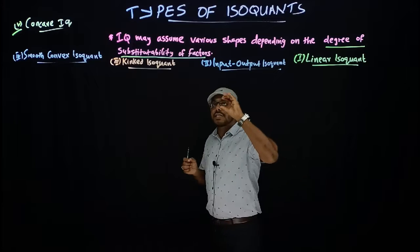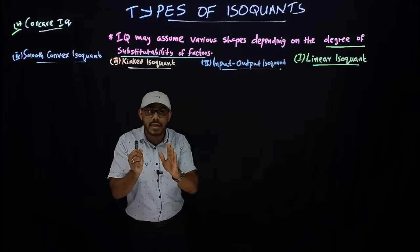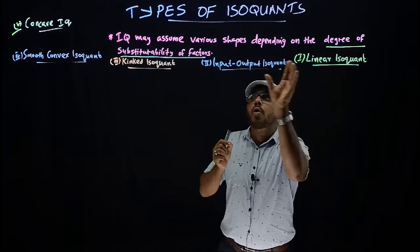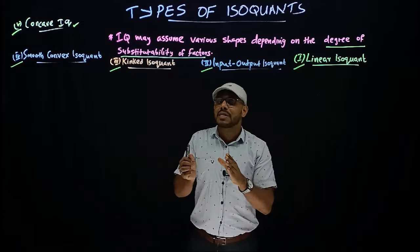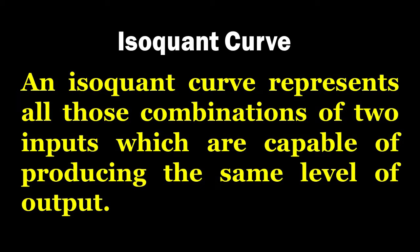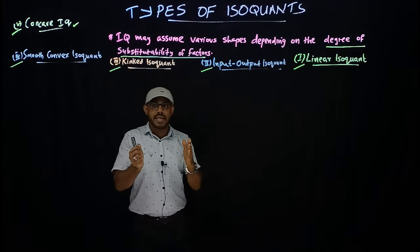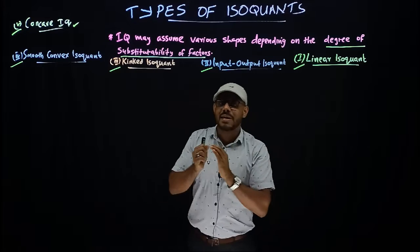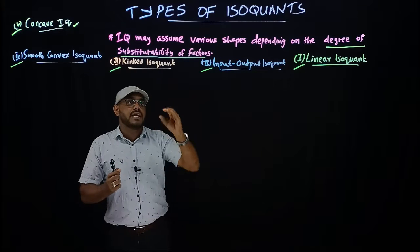Hi friends, welcome back. Today's topic is types of isoquants. We have already discussed what is the meaning of isoquant. An isoquant represents the locus of various combinations of two factors of production — that is, labor and capital — that give an equal level of output. For the exam, you need to start with an introduction, then directly list all types of isoquants with a simple definition.